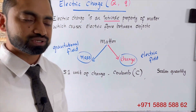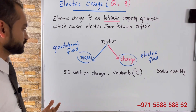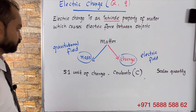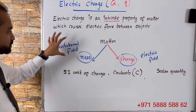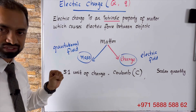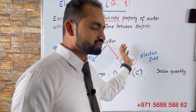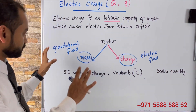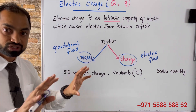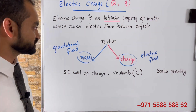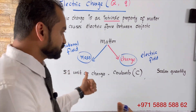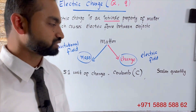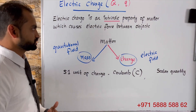Intrinsic property is like mass — mass is another intrinsic property of matter. Mass is related to the gravitational field and charge is related to the electric field. Mass produces gravitational force between objects and charge produces electric force, or electrostatic force, between objects.